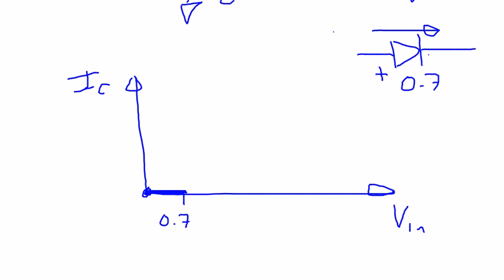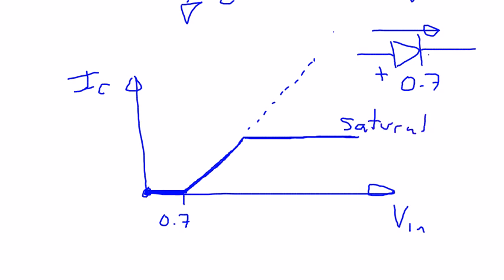But once it does, we turn it on and we're going to start to allow current to flow through the collector, which will turn on the motor. Theoretically this could go forever. However, the collector current is also limited by whatever it's attached to, and it'll eventually become saturated. There are two regions for how much current can flow: there's a linear region, where the collector current is proportional to some beta times the amount of current going through the base.